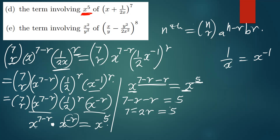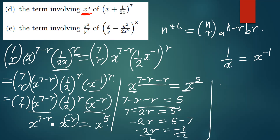So 7 minus 2r equals 5. Moving 7 to the other side: negative 2r equals 5 minus 7, which gives negative 2. Dividing both sides by negative 2, the value of r is simply 1. So at the term containing x to the power 5, the value of r is 1. We can now use the formula to find that term.